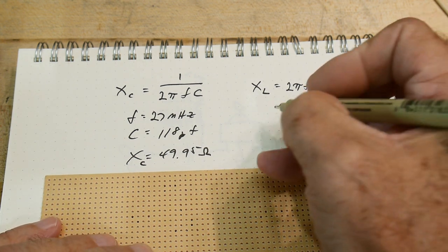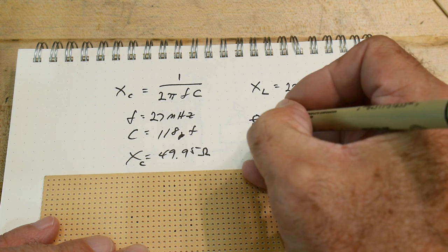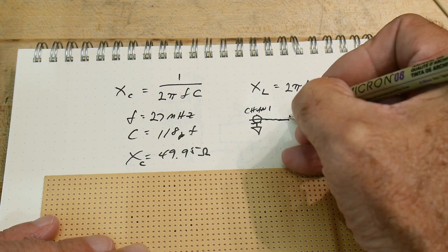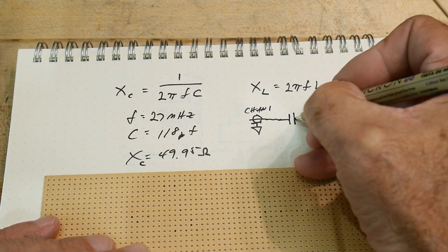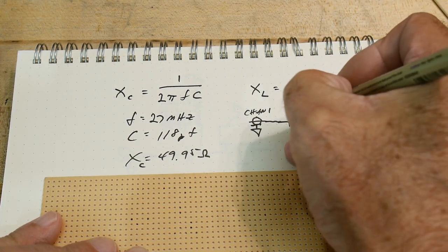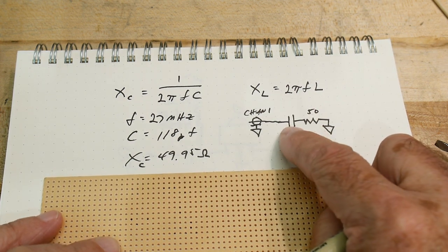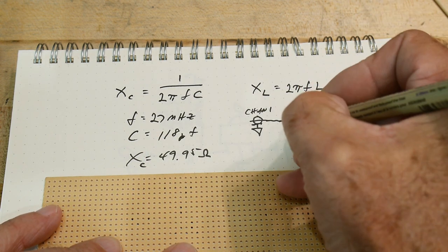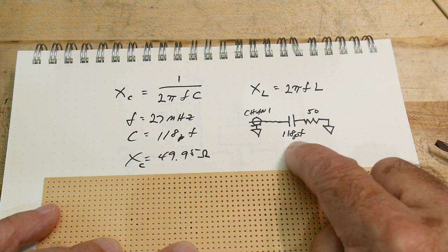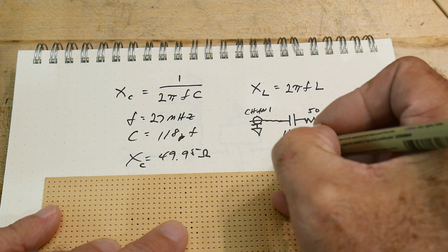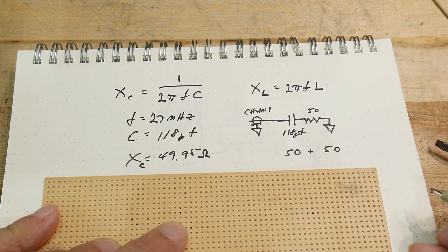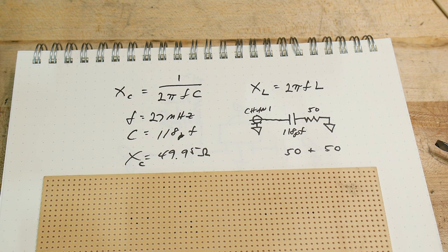The circuit has channel one going through a capacitor, then through a resistor to ground. I'm going to choose a 50-ohm resistor and 118 picofarads for the capacitor. So we have 50 ohms of resistance and 50 ohms of reactance — let's see if the vector network analyzer can give us those two numbers.